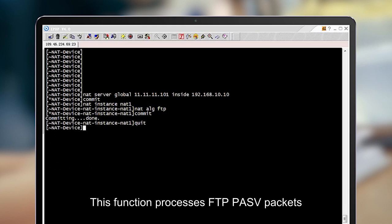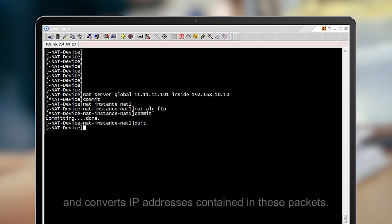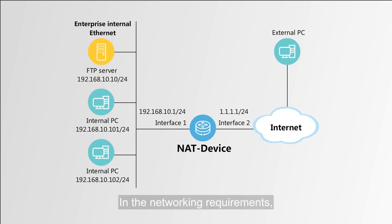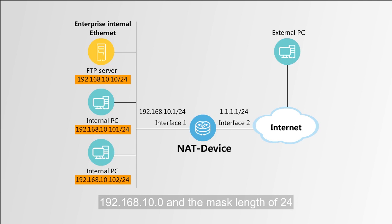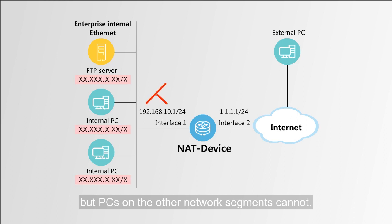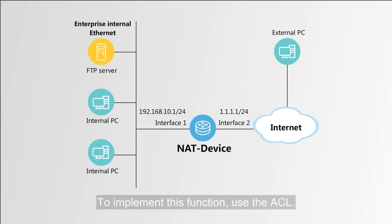The FTP ALG function processes FTP passive packets and converts IP addresses contained in these packets. In the networking requirements, PCs with the internal prefix of 192.168.10.0 and mask length of 24 can access the internet, but PCs on other network segments cannot. To implement this function, use the ACL.